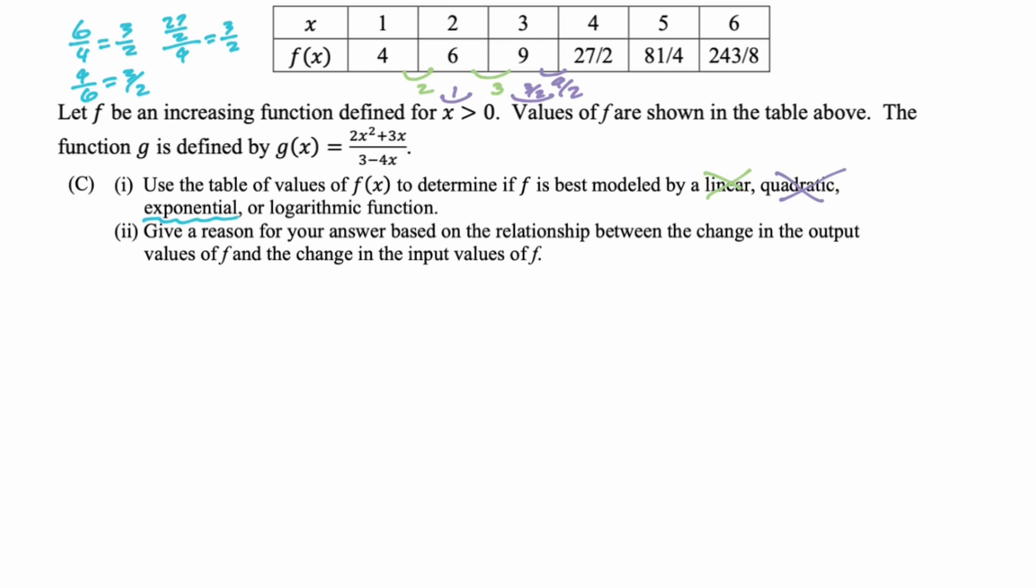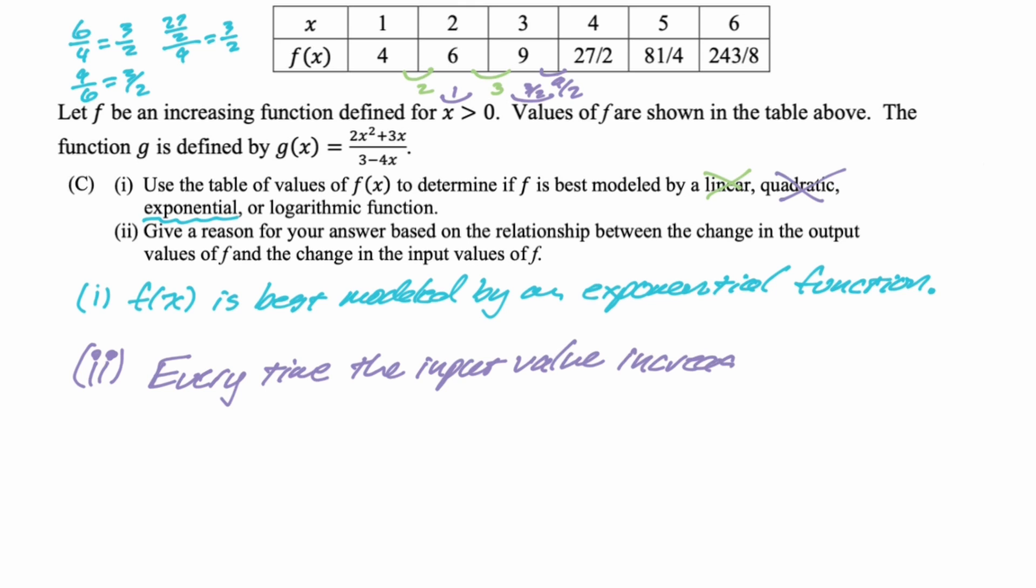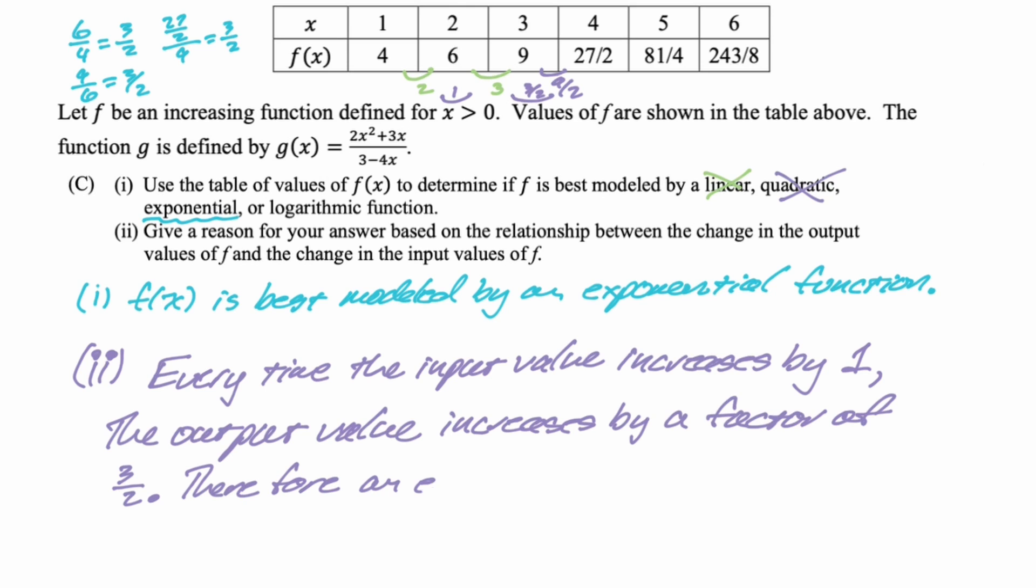So what we'd write is just f of x is best modeled by an exponential function. It's kind of weird, because it doesn't say show any work or anything. Now, in part 2, it does say give a reason for your answer. So I'm going to give what I believe to be the standard reason for this. And I will write it down and read it off for you. I think that what you want to do is kind of master this. So every time the input value increases by 1, although that's only in this case. Maybe it's increasing, on another table, it could increase by 5 every time or by 10 every time, whatever. Every time the input value increases by 1, the output value is increasing by a factor of, and then just fill in the blank. So in this case, it's increasing by a factor of 3 halves. It's also possible that it could decrease by a factor of 2 thirds or something like that. So if the ratio is greater than 1, you're going to say increases. If it's less than 1, we're going to say decreases. But we've said increases by a factor of 3 halves. Therefore, an exponential model works best. And I think that's all you need to do.